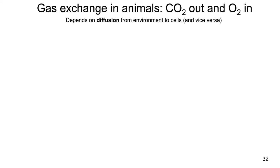Specifically in animals, they need to get CO2 out. CO2 is a waste product of cellular respiration, so all of your cells have to get that CO2 waste product out because if it builds up too much it can be toxic. And they have to get oxygen in, because oxygen is an important reactant in cellular respiration — you need more and more oxygen so that the mitochondria in all of your cells can produce ATP.